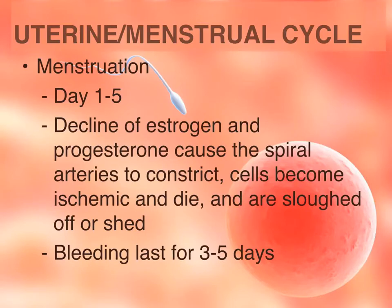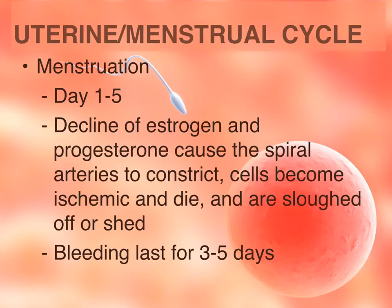The uterine cycle is also called the menstrual cycle. Day one through day five is menstruation, meaning the lining of the endometrium — the inner lining of the uterus — is being shed. This is due to the decline of estrogen and progesterone caused by the degeneration of the corpus luteum into the corpus albicans. The corpus albicans does not release estrogen and progesterone, so those levels go down, cutting off blood supply to the endometrium. The cells die and are sloughed off or shed, and the bleeding can last three to five days.